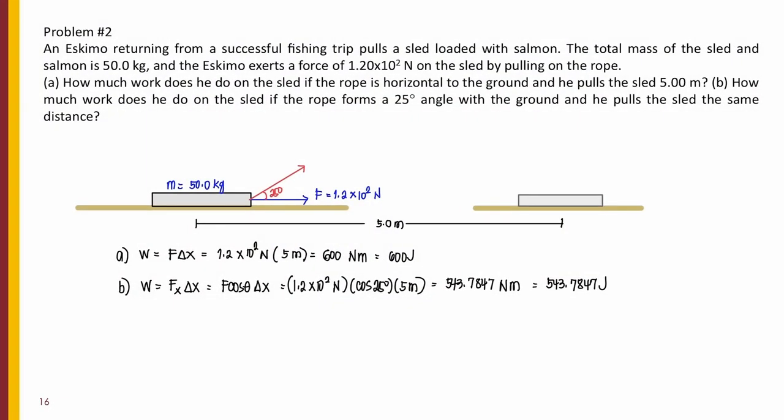So, these are our answers. For letter A, it's 600 joules if the force exerted is simply parallel to the displacement of the object. And in letter B, it's 543.7847 joules if the force exerted forms an angle of 25 degrees with the horizontal.